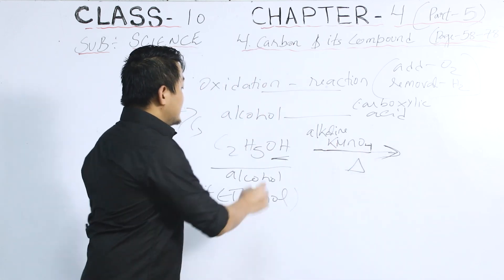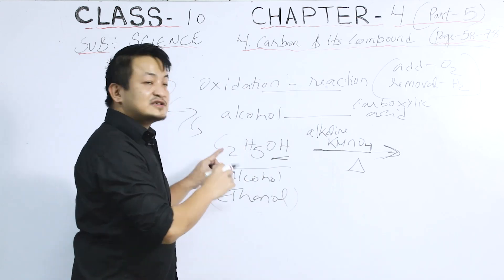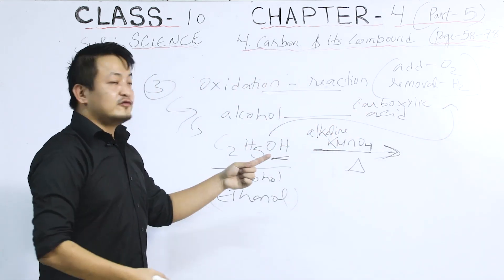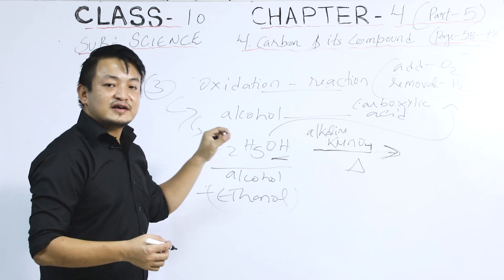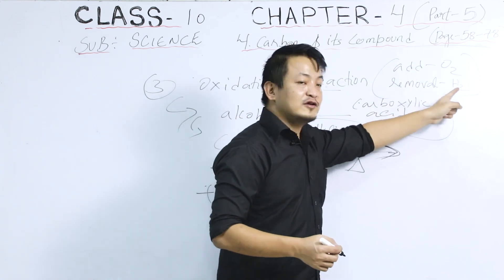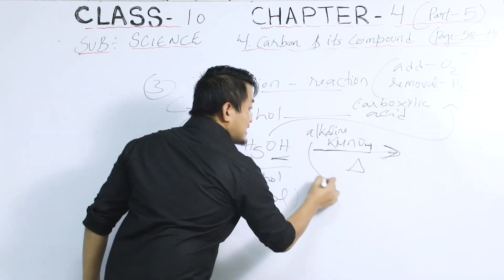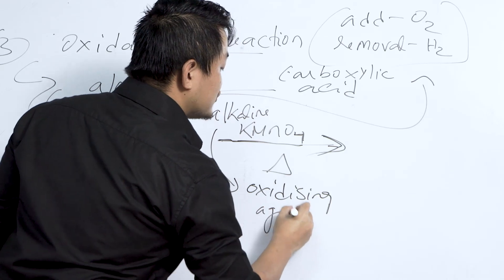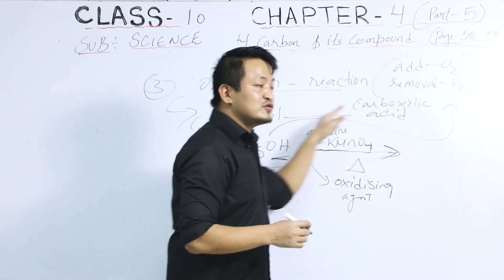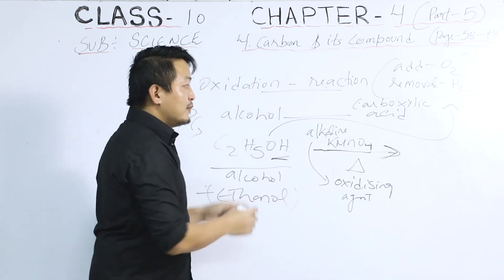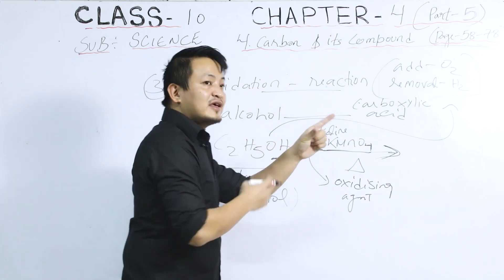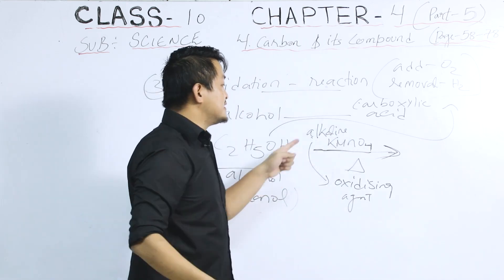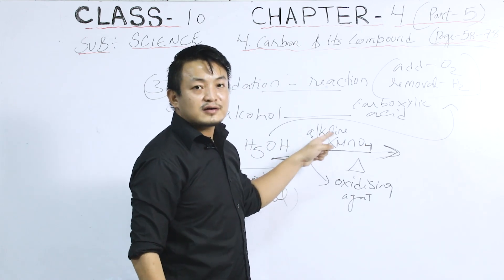In the presence of alkaline KMnO4, this alcohol will undergo oxidation reaction — meaning there will be an addition of oxygen and removal of hydrogen. The alkaline KMnO4 is acting as the oxidizing agent. We cannot convert alcohol directly to acid; we need an agent, and that agent is alkaline KMnO4 — potassium permanganate.